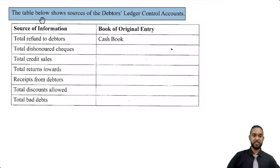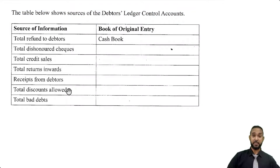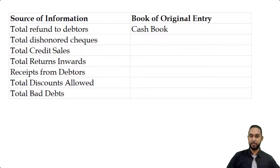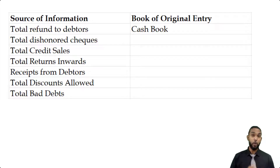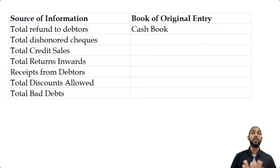For part A of the question, they give us a table showing items used to feed the debtor's control account, and they want us to identify the book of original entry that gives us the information. Your books of original entry, also called journals, include: the sales journal which records only credit sales of stock; the purchases journal which records only credit purchases of stock; returns in and returns out journals which record returns of stock only; the cash book which records all cash and bank transactions; and the general journal which records all other transactions.